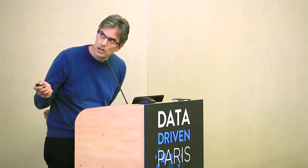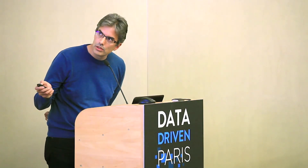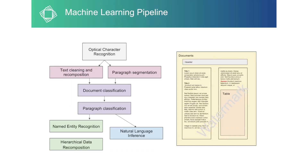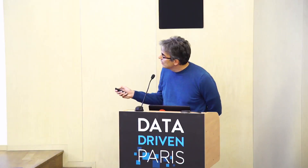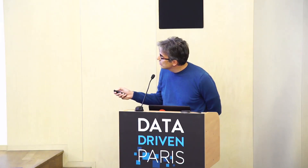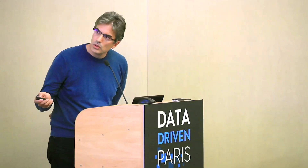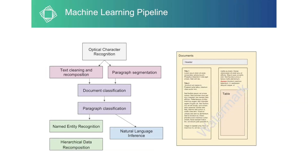Paragraph segmentation means identifying that this is a paragraph, identifying columns, the reading flow direction, and so on. We also clean the text and remove public tables or watermarks. It's complicated, but really important to produce clean input for the next stages. The next stages are document classification, paragraph classification, and then named entity recognition.